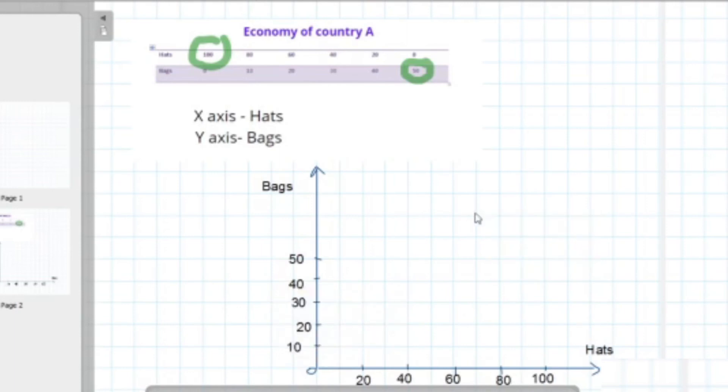Right, now we have labeled our x-axis and y-axis correctly. Now we have to mark the coordinates. If you look at the first one, when hats produce 100 units, no bags are being produced, so this is our first coordinate. When bags produce 50 units, no hats are being produced: 0, 50.